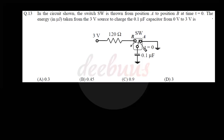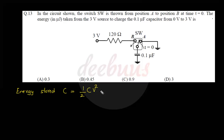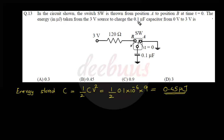In the circuit shown, the switch is thrown from position A to position B at t = 0. The energy taken from the 3 V source to charge the 0.1 μF capacitor from 0 to 3 V is what? The energy stored in a capacitor is (1/2)CV² = (1/2) × 0.1×10⁻⁶ × 9 = 0.45 μJ.